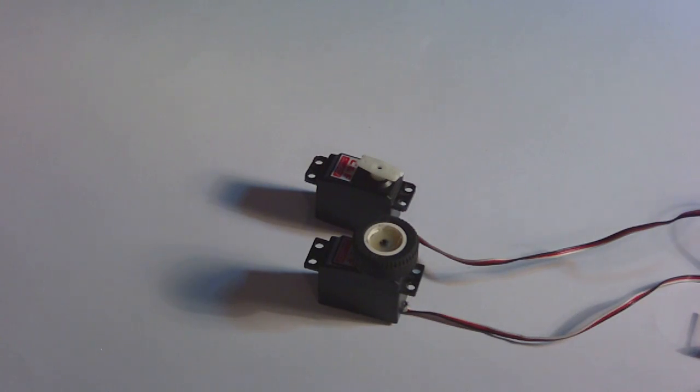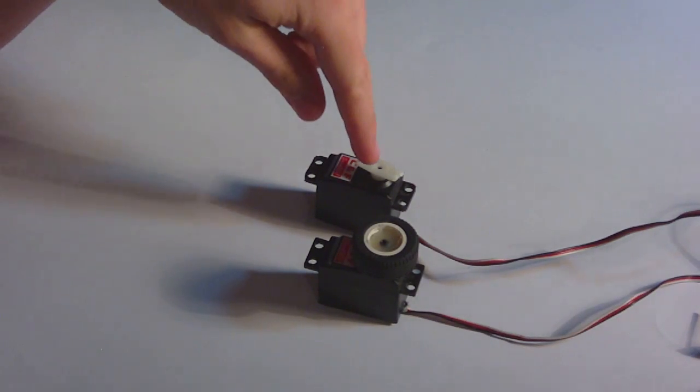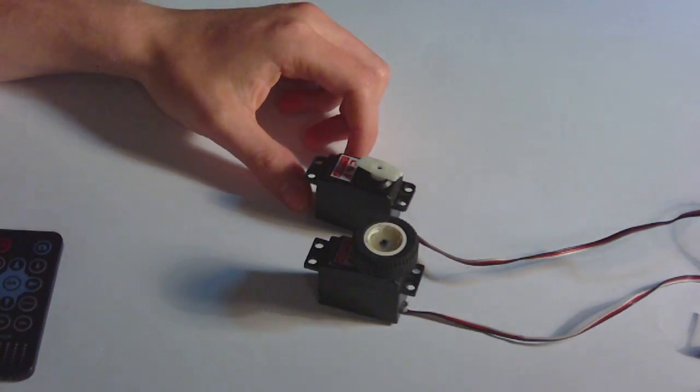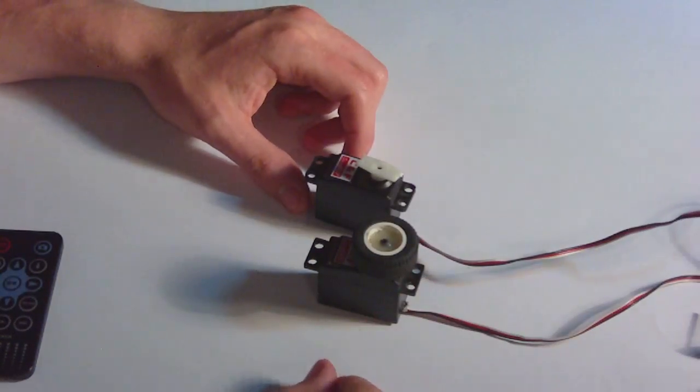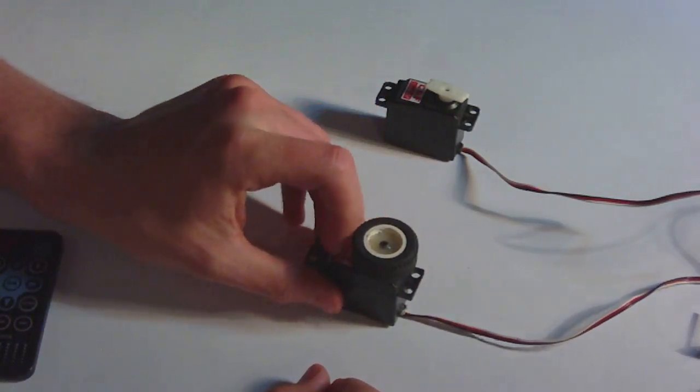Today I will show you how you can transform a normal standard servo with a range of 160 degrees to a servo with full rotation in both ways. All you have to do is take your servo apart.